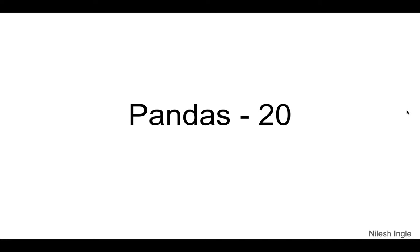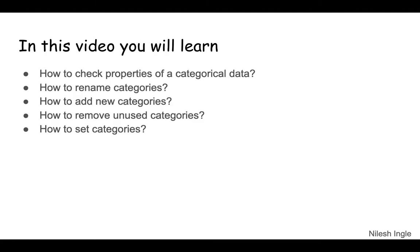Hello and welcome to Learn Data. In this video we'll continue learning about pandas and specifically dive deeper into categorical data. You'll learn how to check properties of categorical data such as whether they are ordered or not, what categories exist in the dataset, how to rename categories, add new categories, remove unused categories, and how to set categories. Let's get into Jupyter Notebook and start coding.